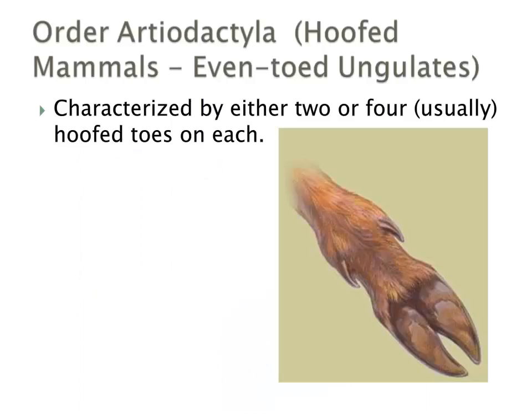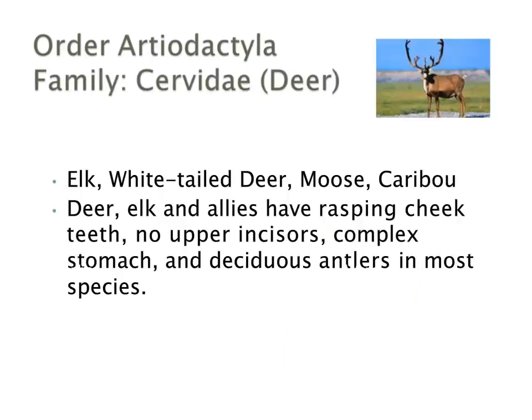Our first order of study will be Artiodactyla, which are hoofed animals or even-toed ungulates, characterized by having two or four usually hoofed toes on each foot. This order includes species like elk, white-tailed deer, moose, and caribou. They have unique characteristics like rasping cheek teeth, no upper incisors, a very complex stomach, and deciduous antlers in most cases.